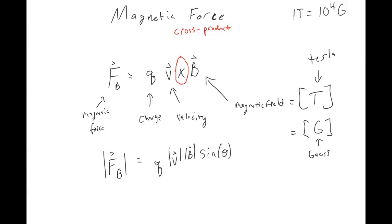One of the first conceptual things to take away from this is that if you don't have a charge, then you're not going to feel a magnetic force. And if you're not moving, then you also don't have a magnetic force. So stationary objects don't have a magnetic force, and neutral charged objects also don't have a magnetic force because then charge would be zero.